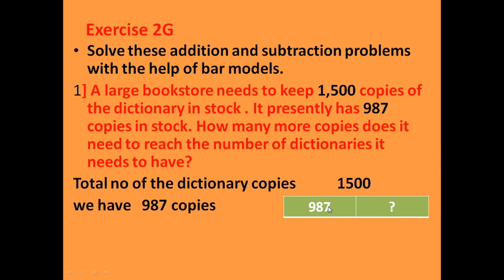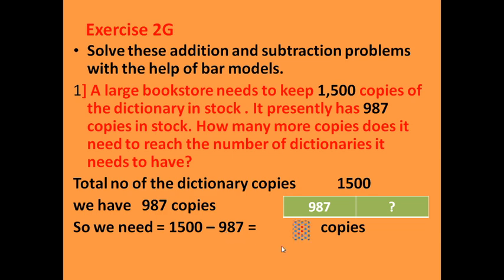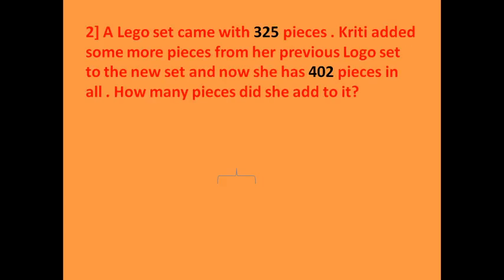We subtract 1,500 minus 987, and the answer is 513 copies. Number 2: A large set came with 325 pieces. Keriti added some more pieces from her previous logo set to the new set. Now she has 402 pieces in all. How many pieces did she add?